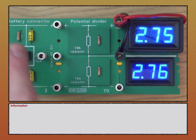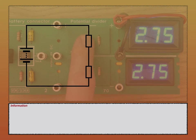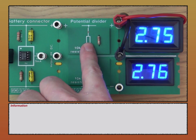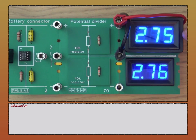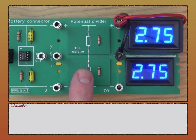This video is looking at the voltage divider circuit. Here we have a battery connector, two resistors in series — at the top a 10k (10,000 ohm) resistor and down here also a 10k resistor. It's a simple series circuit. I've also got two voltmeters, both built myself, placed in parallel across the components — one measuring the voltage across the top resistor, and one measuring the voltage across the bottom 10k resistor.